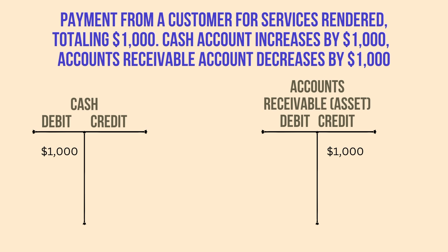Now consider another example. Suppose you receive payment from a customer for services rendered, totaling $1,000. In this case, your cash account increases by $1,000, which is a debit, while your accounts receivable account decreases by $1,000, which is a credit. Once again, the equation remains balanced — that's the magic of the double entry system. It ensures the balance sheet remains balanced.